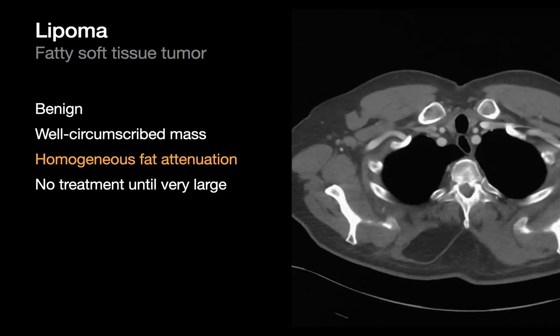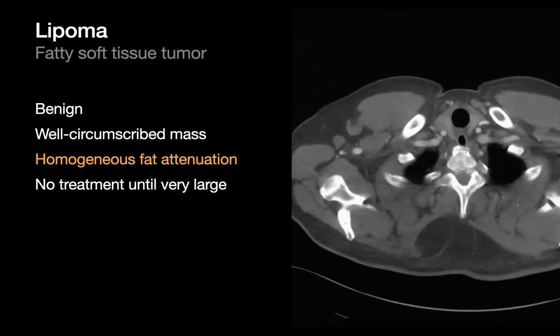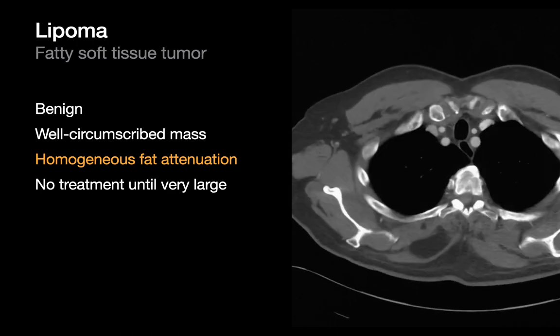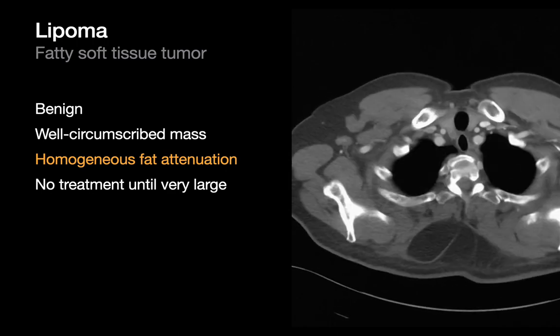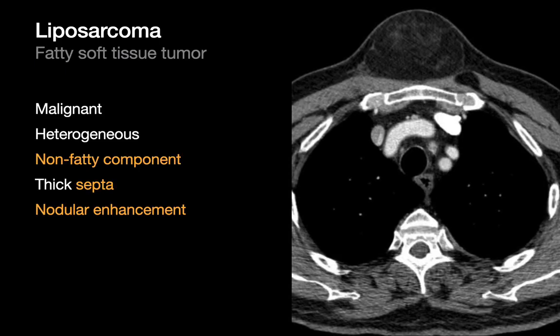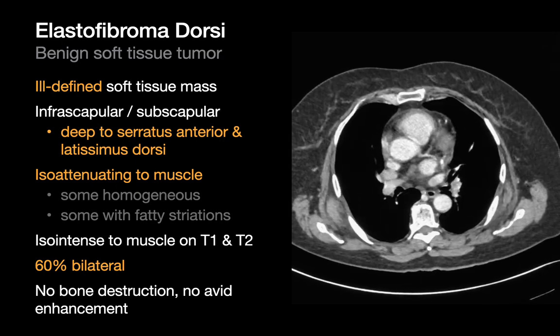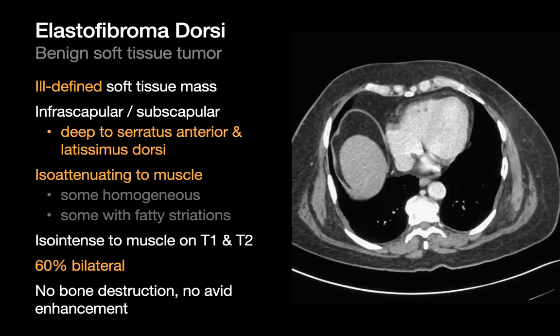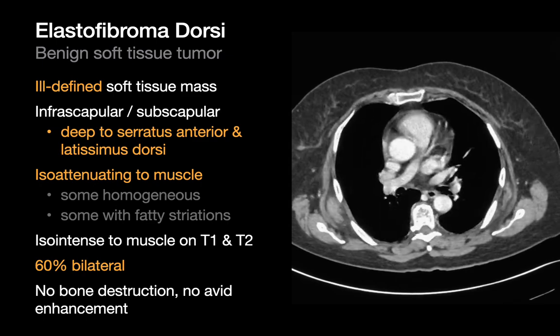Lipomas will appear as small, medium, or large chest wall masses with homogeneous fat attenuation. They're benign and generally left alone unless they become huge. Liposarcomas are malignant lipomatous tumors that, unlike lipomas, will have a non-fatty component — appearing as stranding, indistinct soft tissue opacities, or nodular soft tissue opacities that can enhance on contrast imaging. Elastofibromas are ill-defined soft tissue masses in a very characteristic location near the inferior scapular tip, deep to the serratus and latissimus dorsi.